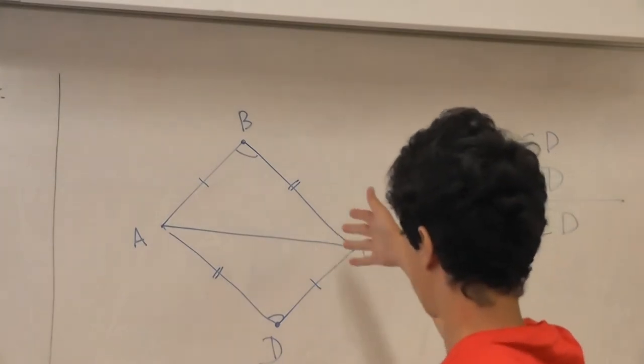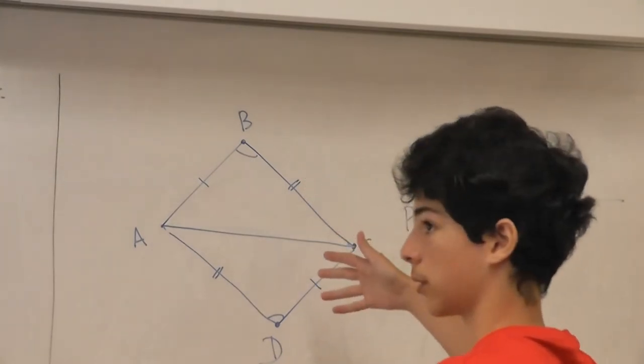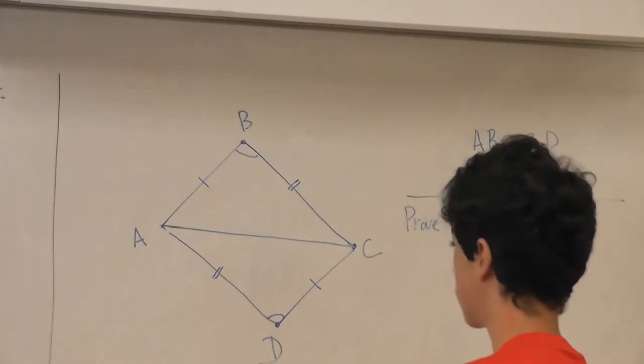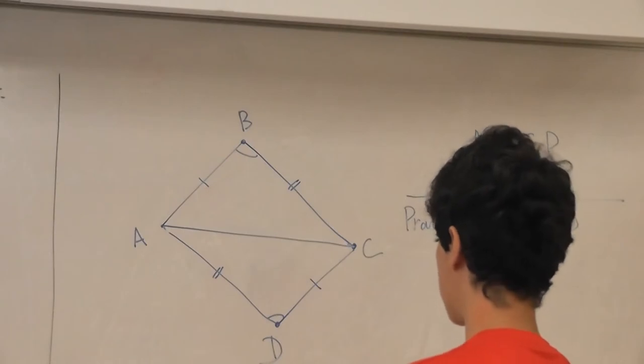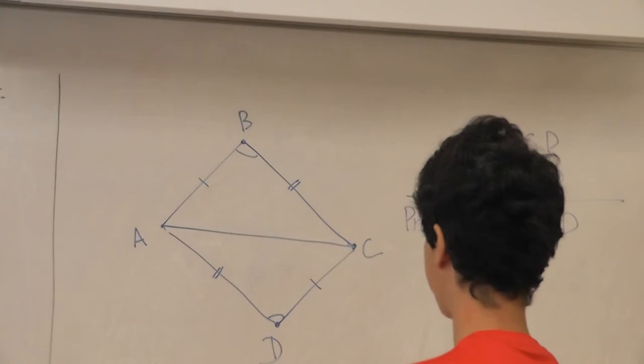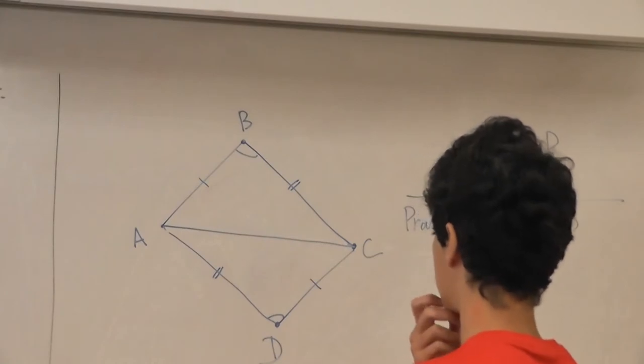So that we make two triangles. And this will get to ABC and ACD. Yes. And? These triangles are equal because...